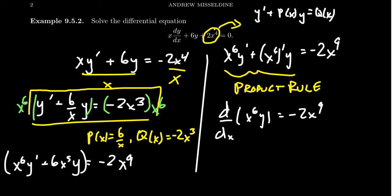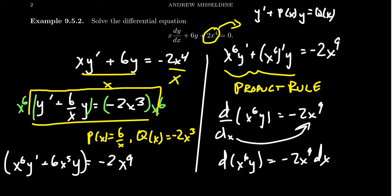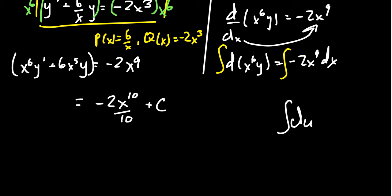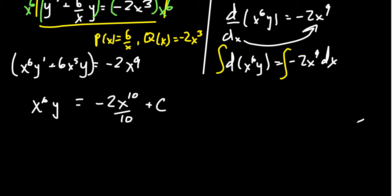We can now separate variables: move dx to the other side to get d of (x to the sixth times y) equals negative 2x to the ninth dx. With a differential on both sides, we integrate both sides. The right-hand side integrates with respect to x to give negative 2x to the tenth over ten plus a constant. On the left-hand side, integrating d of (x to the sixth y) just gives x to the sixth y, since integrating d of u always equals u. So we get x to the sixth y equals negative x to the tenth over five plus C. Now divide both sides by x to the sixth.